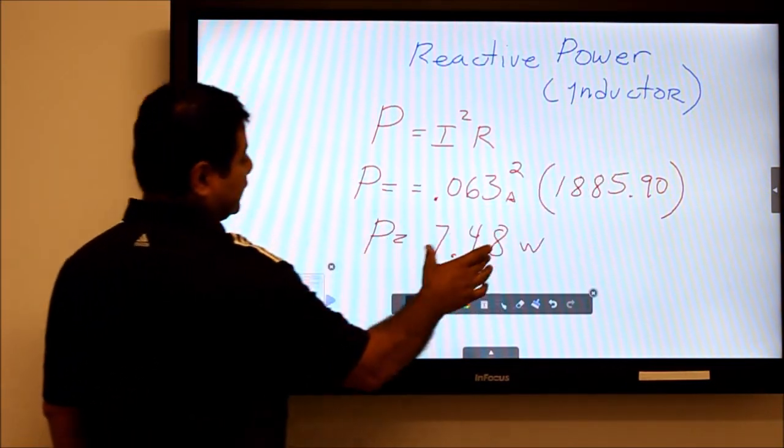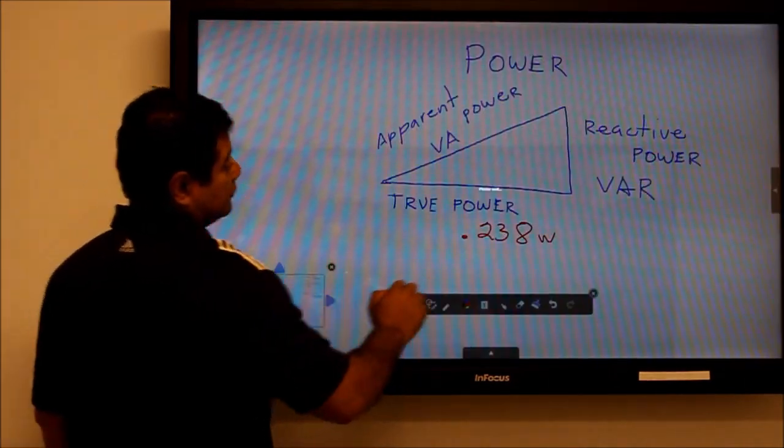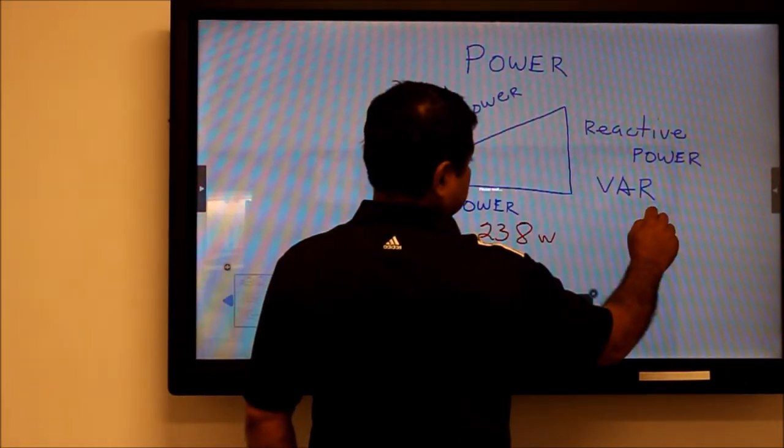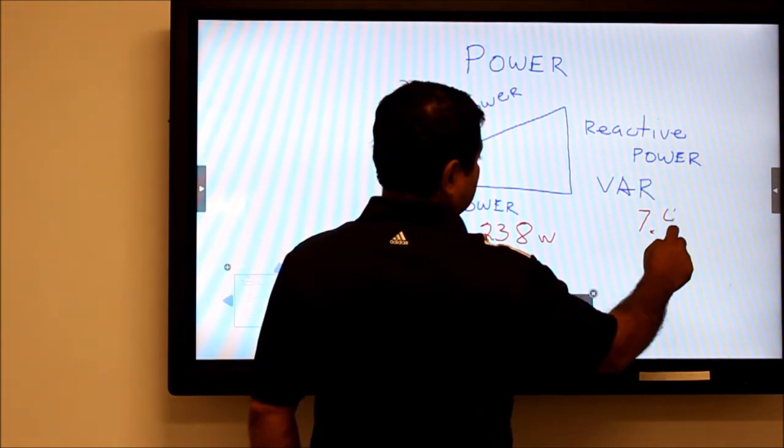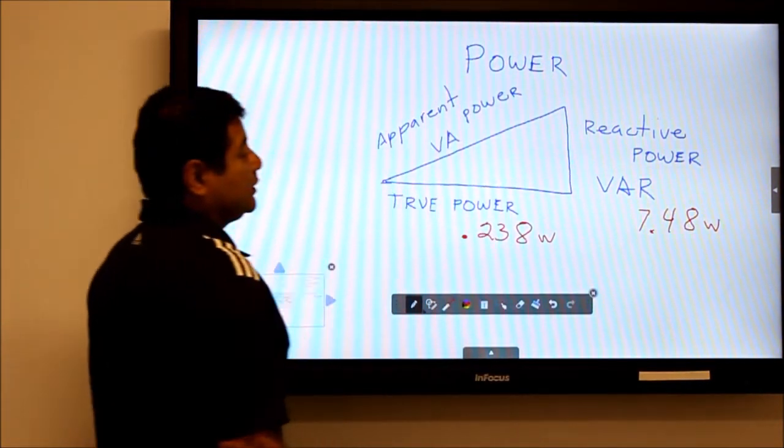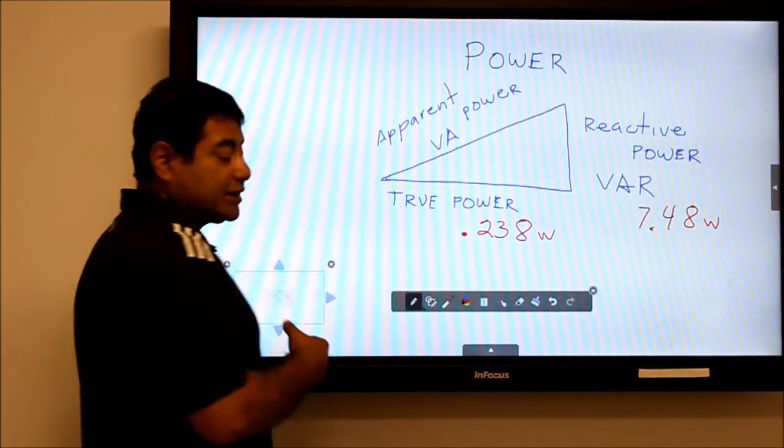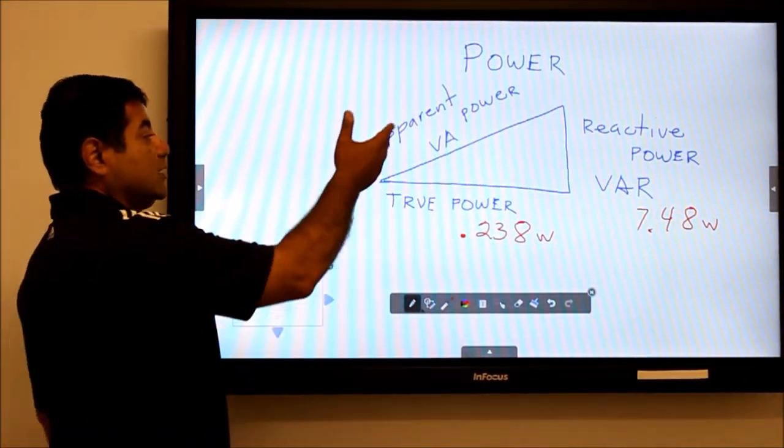Now that I have the value, I can replace it right here: 7.48 watts. So now I have my reactive power and my true power. The next thing that we're going to calculate is the apparent power.